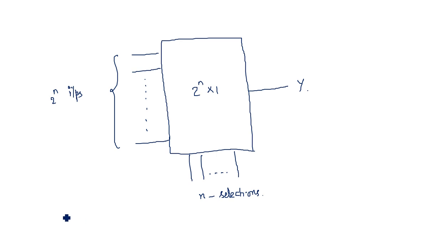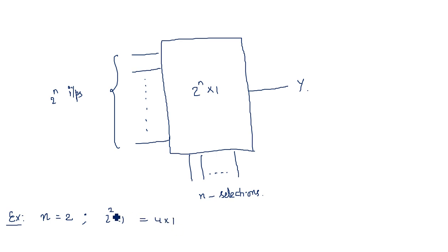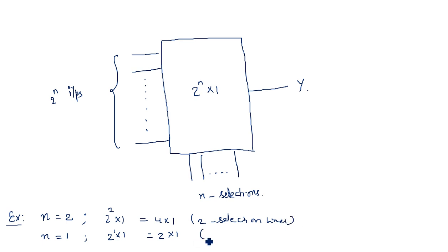For example, if n equals 2, the size of the multiplexer is 2^2 by 1, which equals 4 by 1 — two selection lines and four inputs with one output. If n equals 1, the size is 2 by 1, with one selection line. Let us first look at the 2 by 1 multiplexer.